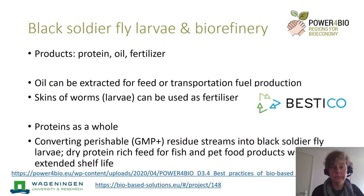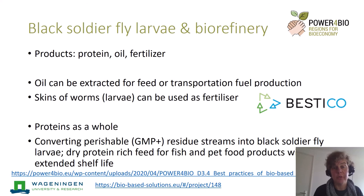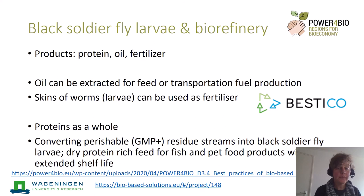The final example is the black soldier fly larvae. Black soldier flies can be grown on side streams and feed — outside Europe they can sometimes also be grown on manure. From this you can make many products: protein, oil, and fertilizers. The oil can be extracted for feed but can also be used for transportation fuel production. The skins of the larvae can be used as fertilizer — these two products are made by Bestico, a Dutch company. You can also use the black soldier fly for proteins; very often the larvae are used as a whole, dried, and then used for fish and pet food products.